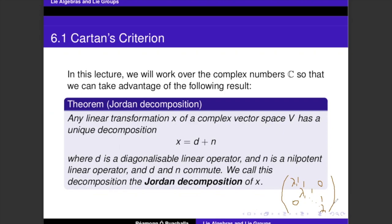That decomposition is the theorem here — really a corollary of the Jordan normal form. The diagonalizable part and the nilpotent part commute with each other; this is called the Jordan decomposition. We'll go into it in more detail in following lectures.